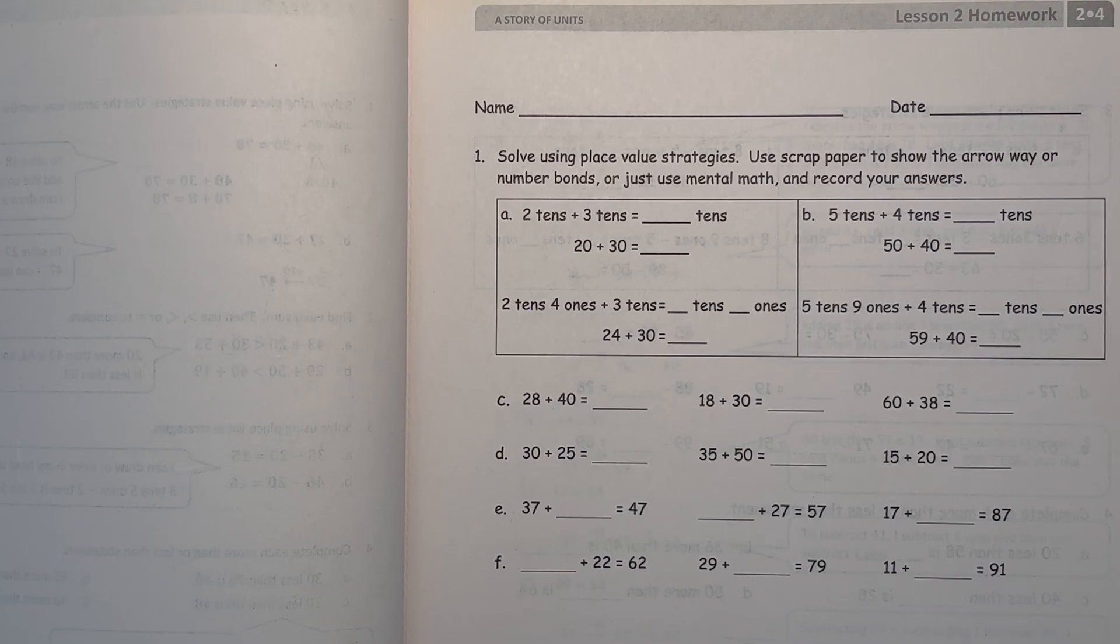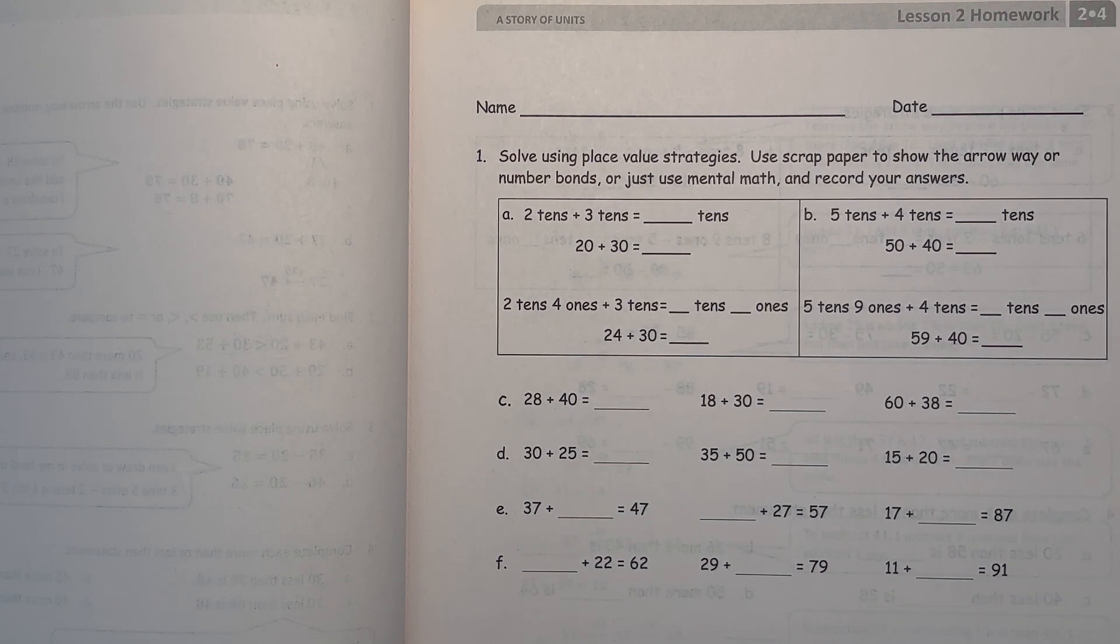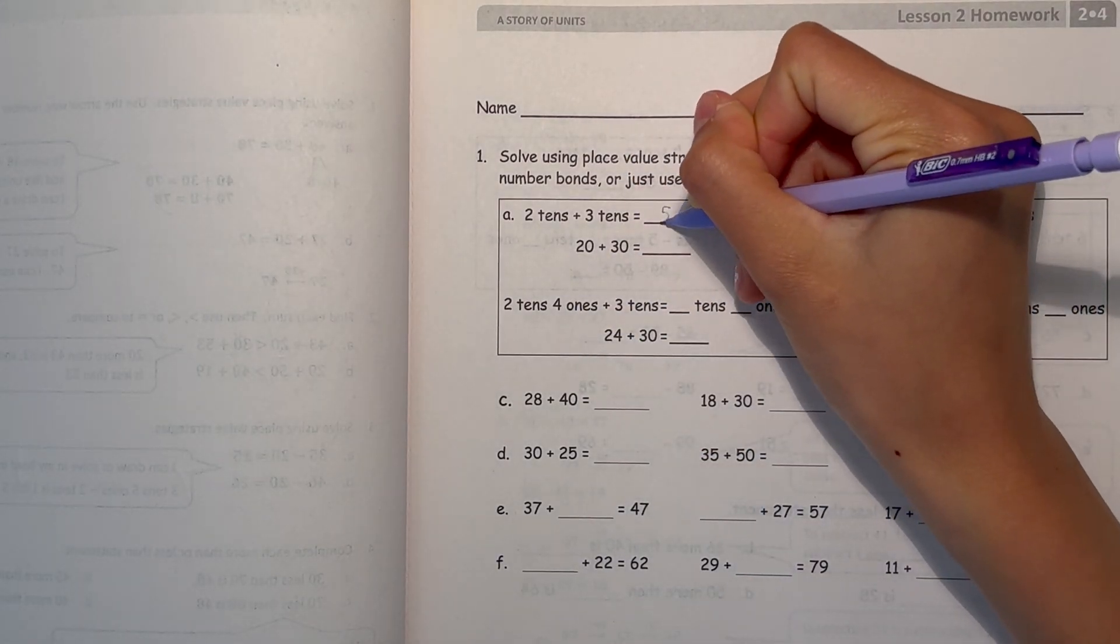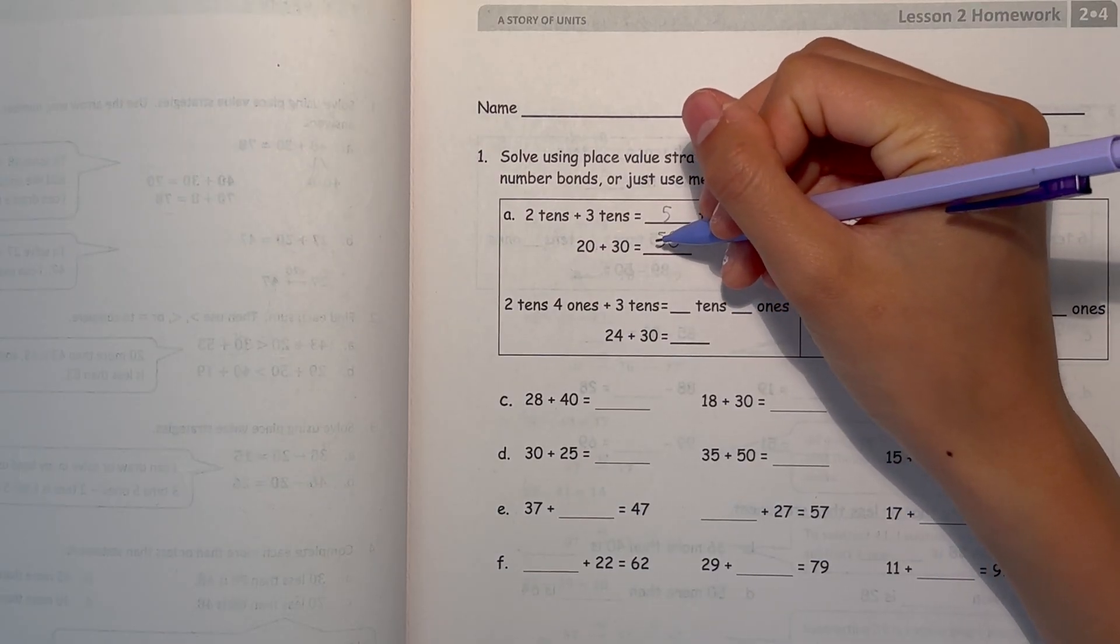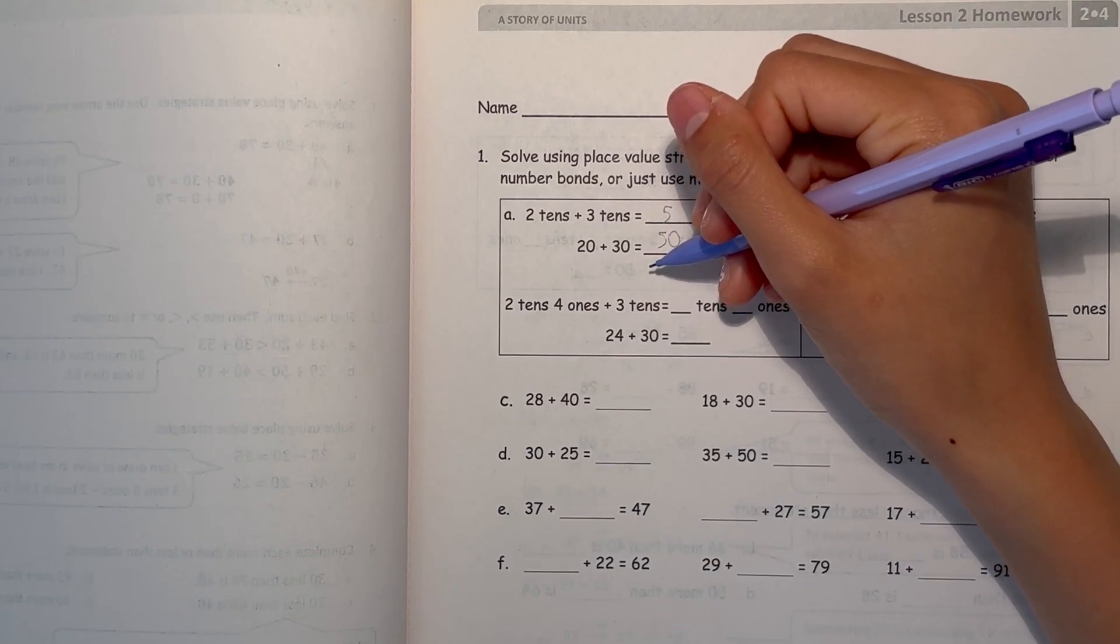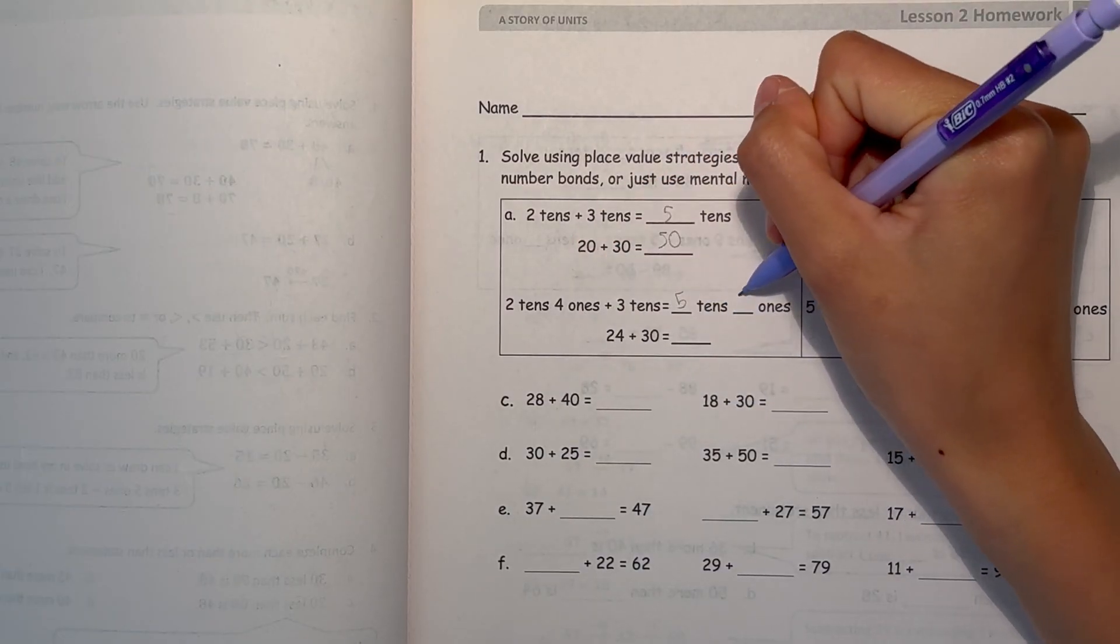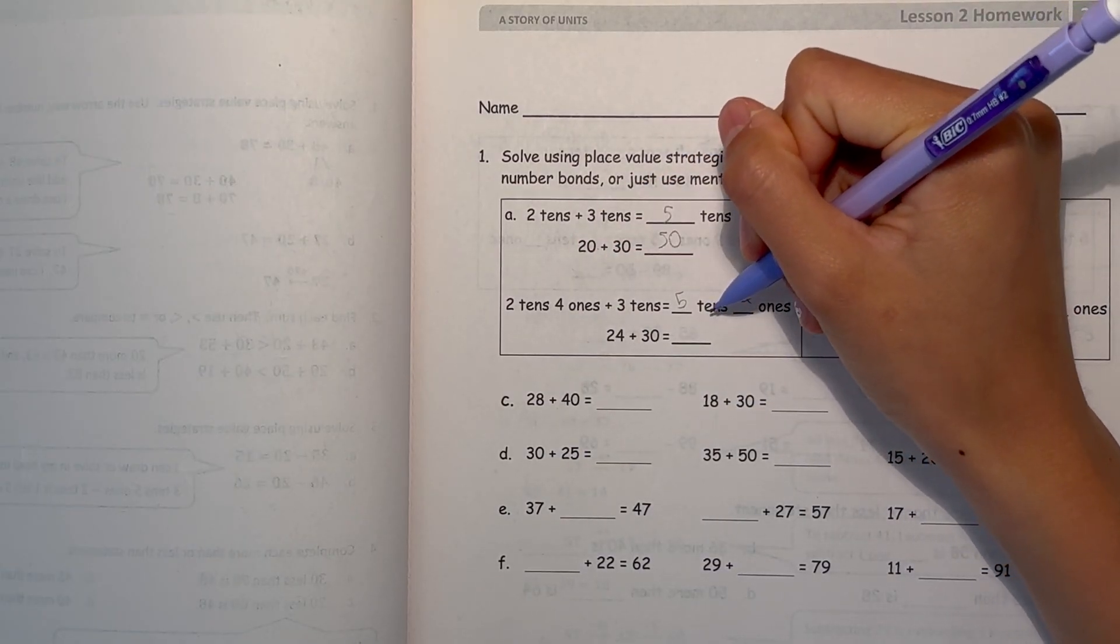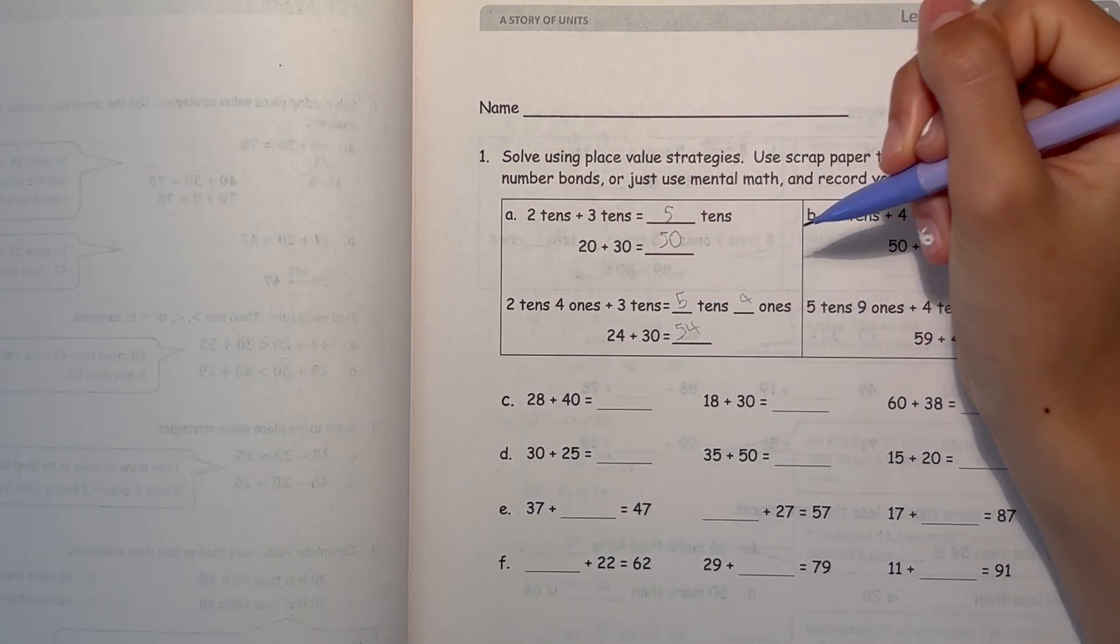We have 2 tens plus 3 tens. So how many tens is that? Well, 2 plus 3 is 5. So we have 2 tens plus 3 tens and that would be 5 tens. So 20 plus 30 is 50. And now 2 tens, 4 ones plus 3 tens. So that's 5 tens and 4 ones. So 24 plus 30 is 54. 5 tens, 4 ones.